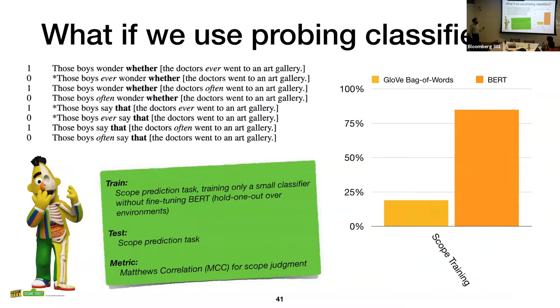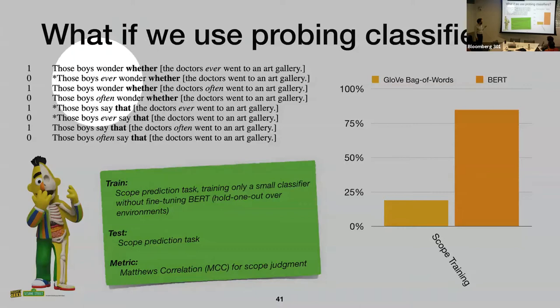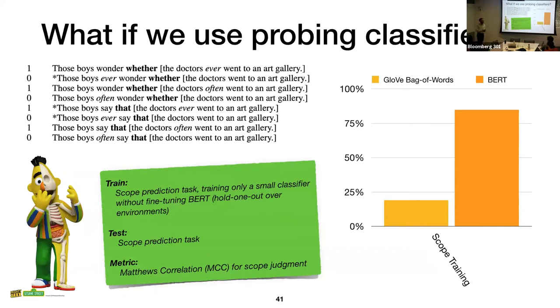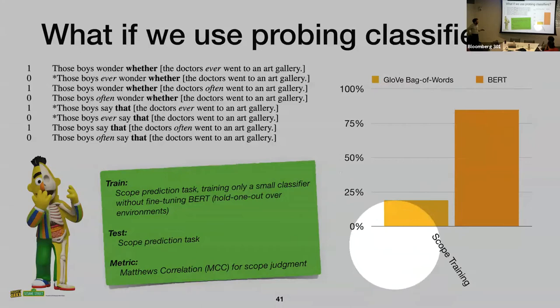One more approach: a probing classifier with a probing auxiliary task. Instead of asking about acceptability, we ask something more specific — whether a given word position is in a licensing environment where you could put an NPI, whether or not one is actually there. We reorganize the data to train a specialized classifier glued onto the side of a BERT model. The results are somewhat encouraging: BERT is not perfect, but much better than the baseline at this task.